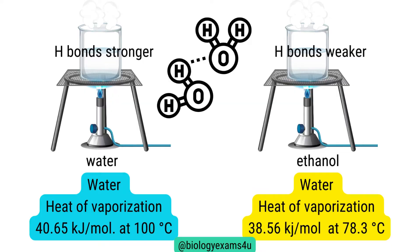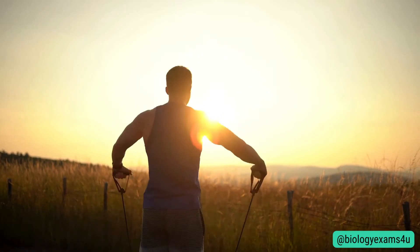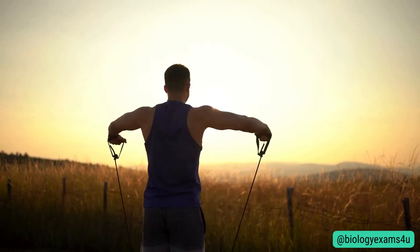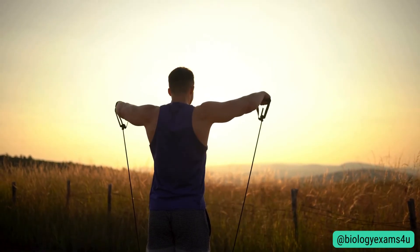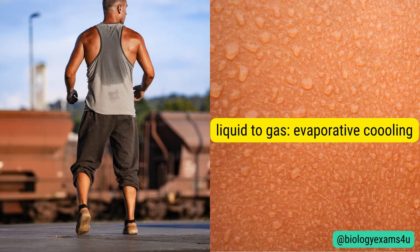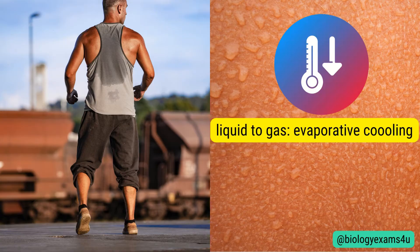When we exercise on a hot day, our body sweats. The water on our skin absorbs heat from our body and evaporates, turning from liquid to gas. This process of evaporation requires a lot of heat due to water's high heat of vaporization. As the sweat evaporates, it takes away heat from our body, helping to cool us down — this is called evaporative cooling. A high amount of energy is required to change water from liquid form to vapor or gaseous state.